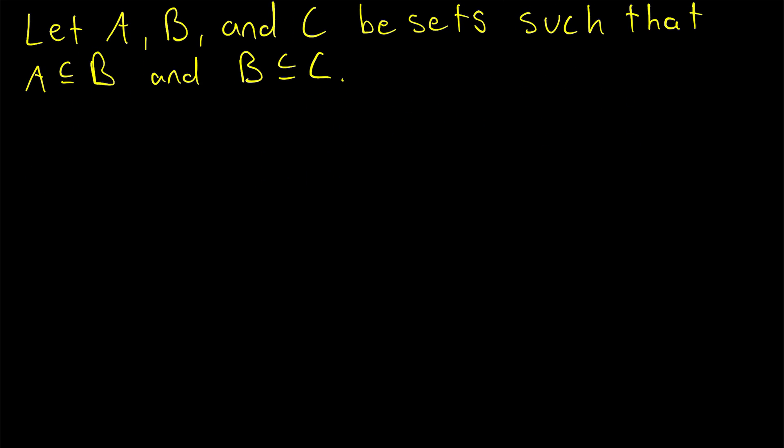To do that, we just need to show that any element of A is also an element of C. If our set A happens to be the empty set, then it is certainly a subset of C. By definition of subset, the empty set is a subset of every set. I'll leave a link in the description to a lesson I did talking about that if you want to hear that explained in more detail. So if A is the empty set, clearly A is a subset of C.